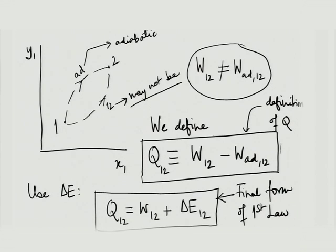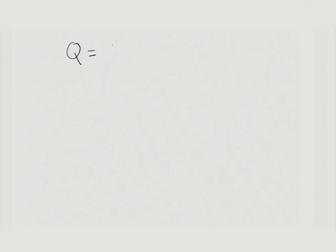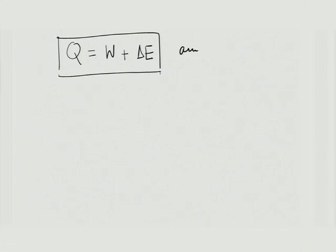Adiabatic work being independent of path is the first law. Defining it as an energy change is the definition of energy. For a non-adiabatic process, W₁₂ need not equal W-adiabatic₁₂ — the difference, if any, is defined as heat transfer Q₁₂. The final form can now be written as Q equals W plus delta E. This is the final form for any process.